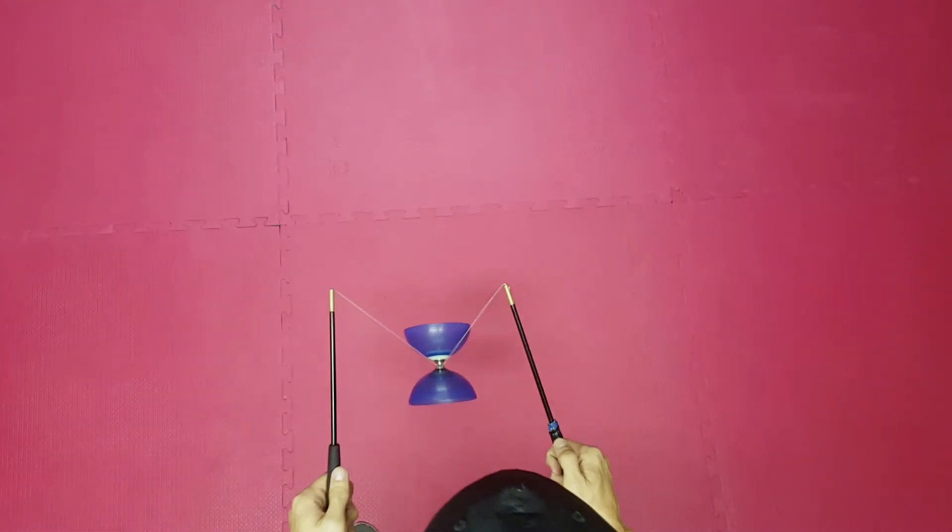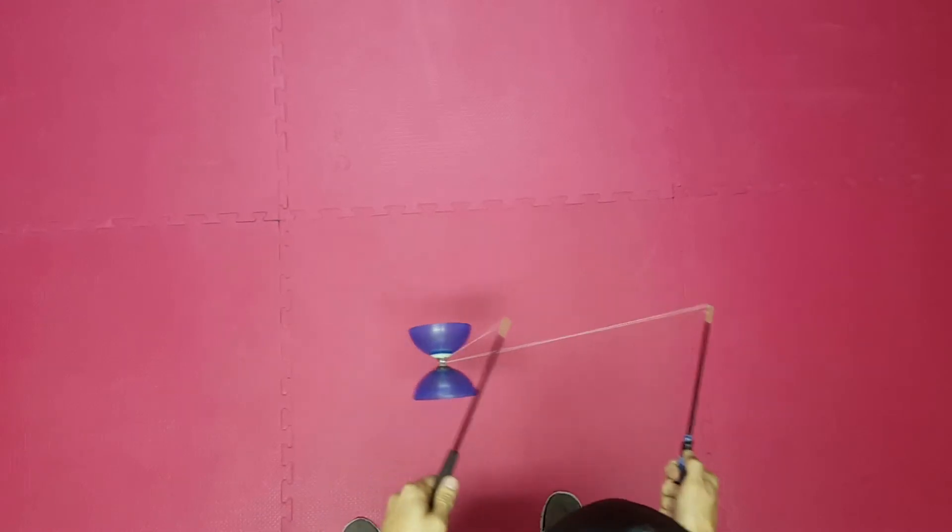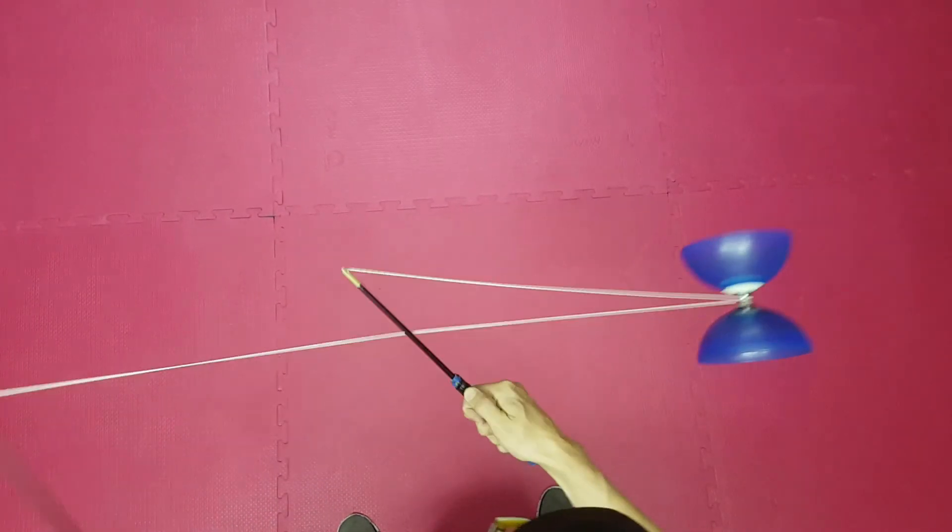We start with the right side trapeze. We swing the Diabolo under the right stick. The string touches the underside of the stick.